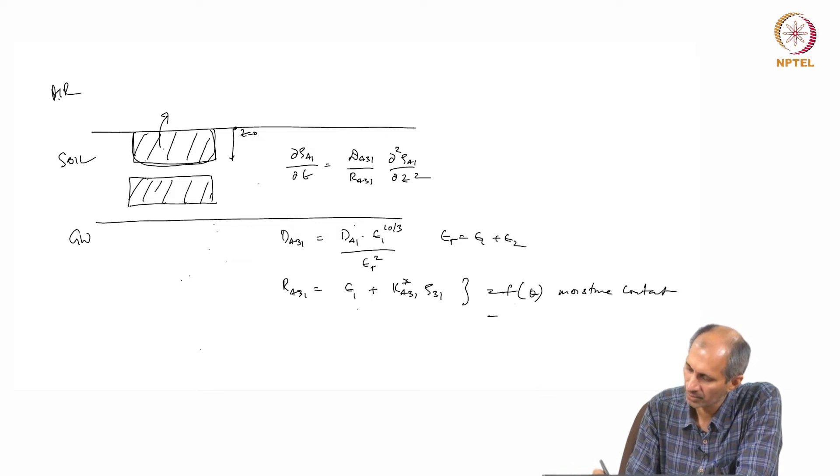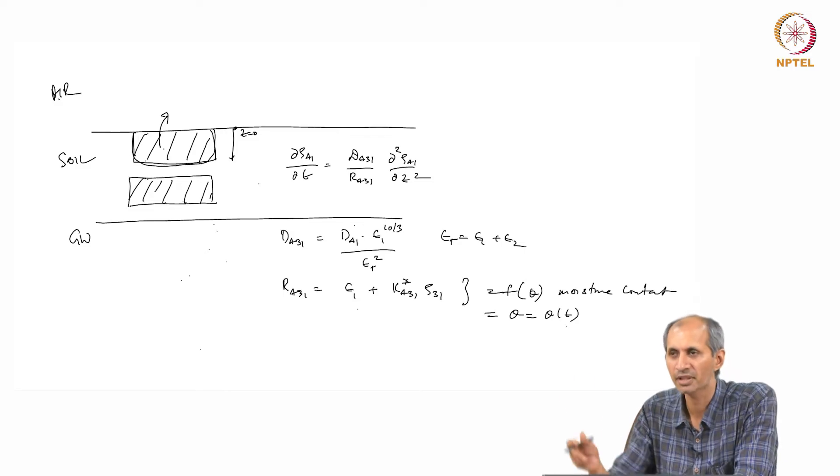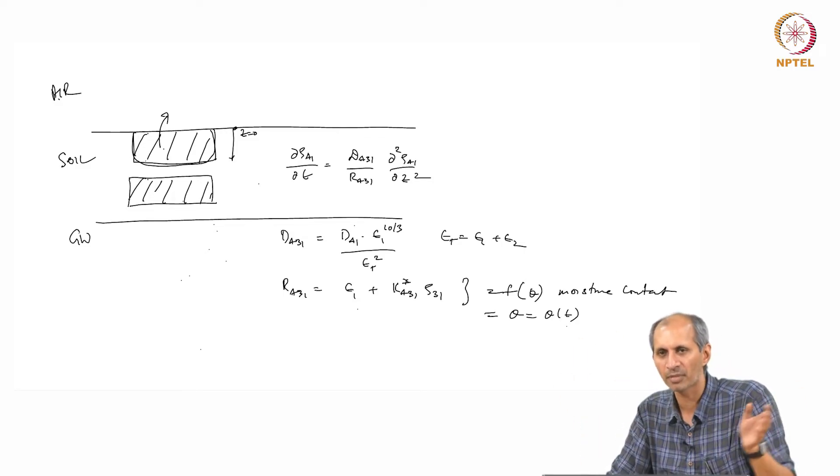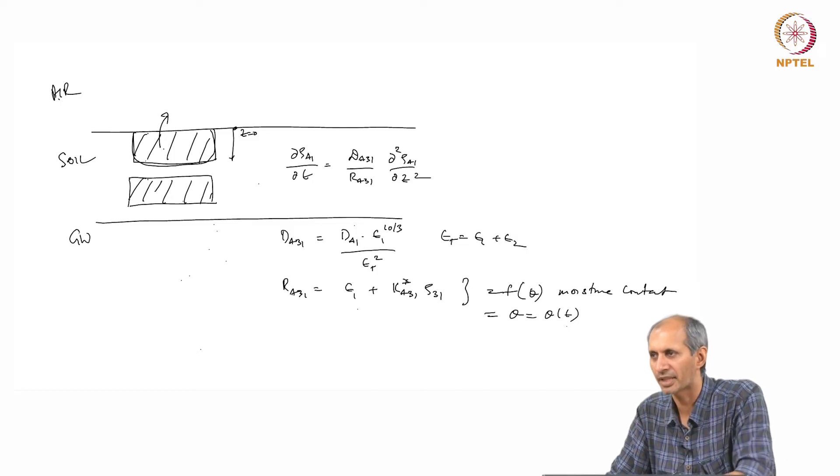So the retardation constant can change with time, this is something that happens in soil. So, this is a function of the moisture content. And moisture content is a function of time, moisture content can change. It can change during a day, it can change in months or weeks, years.